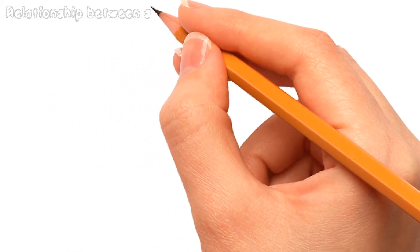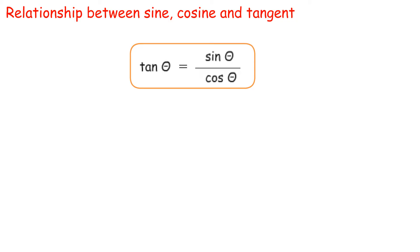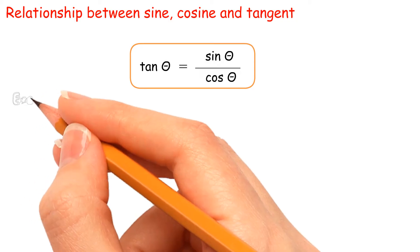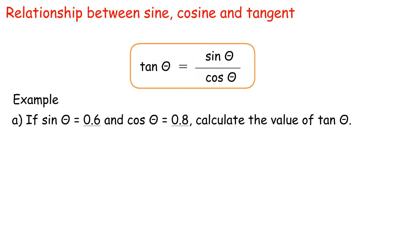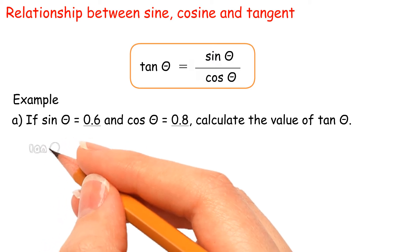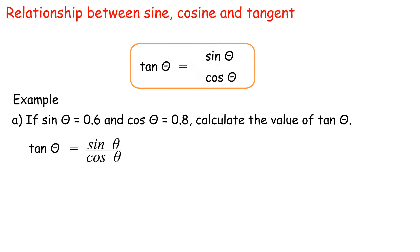Relationship between sine, cosine and tangent: tan θ equals sin θ over cos θ. Example A: If sin θ equals 0.6 and cos θ equals 0.8, calculate the value of tan θ. Tan θ equals sin θ over cos θ, equals 0.6 over 0.8, equals 3 over 4, equals 0.75.